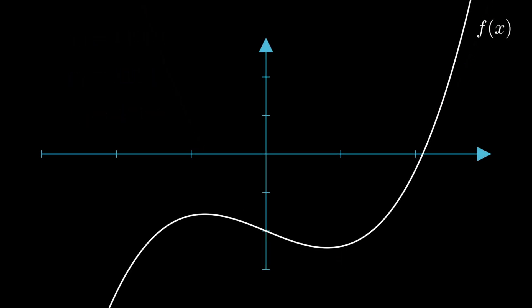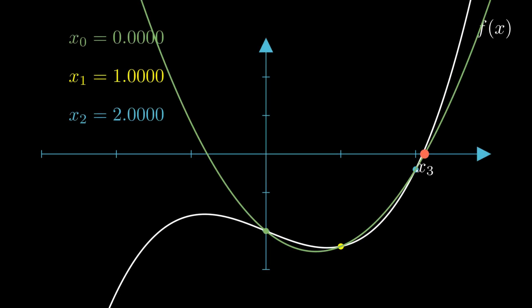Let's dive in. First, we plot the function f of x on the graph. Then, we select three initial points x sub 0, x sub 1, and x sub 2, which are displayed on the graph.